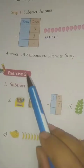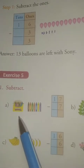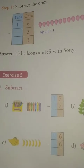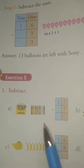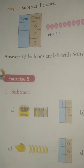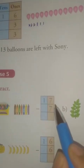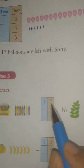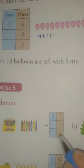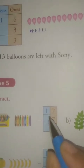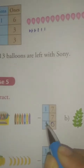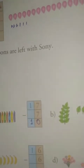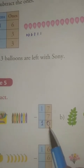Now Exercise Number 5 — Subtract. A: 17 minus 7. First we do the ones place: 7 minus 7 is equal to 0. And 1 minus 0 is equal to 1 — no number means you can take it as 0. So 17 minus 7 is equal to 10.